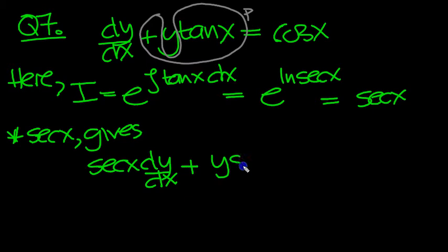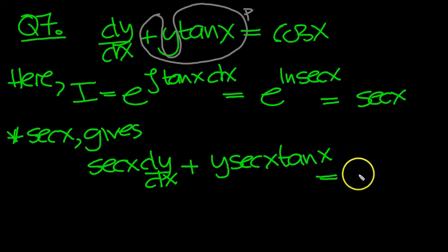plus sine over cos, so it's y sec tan, is equal to, now sec times cos. Sec is 1 over cos. So 1 over cos times cos is just 1. So I'm going to write that down straight away.